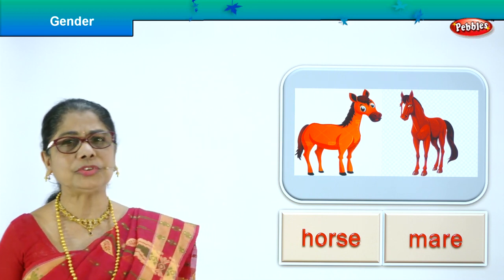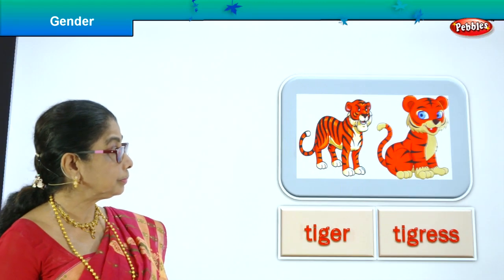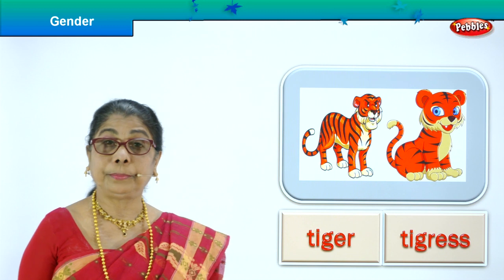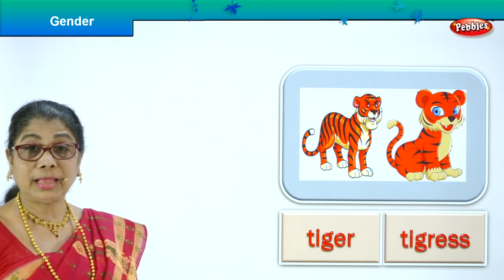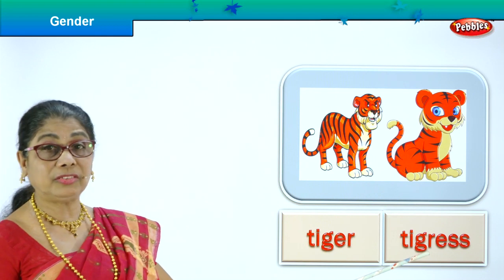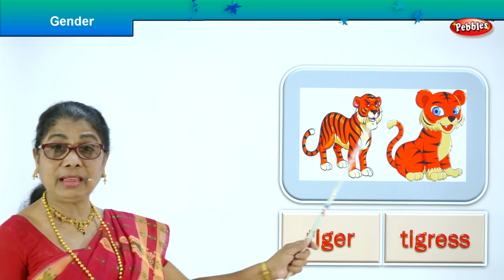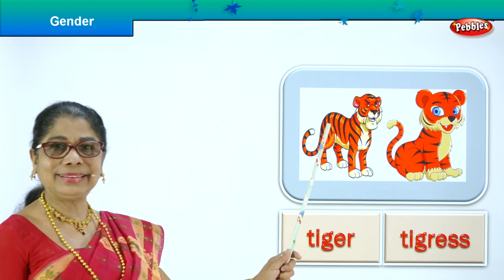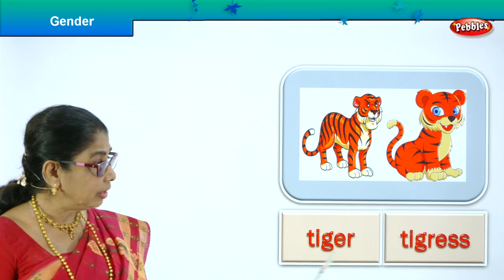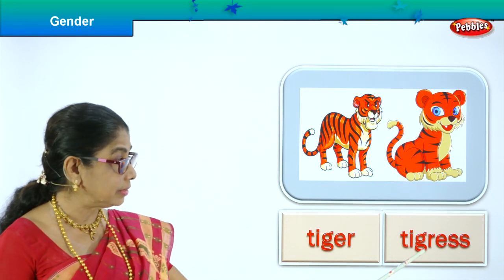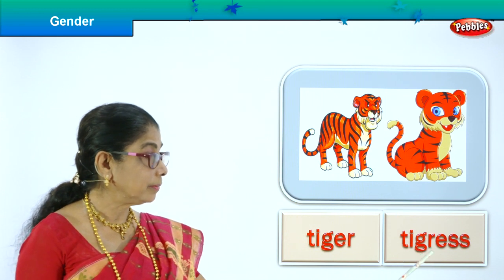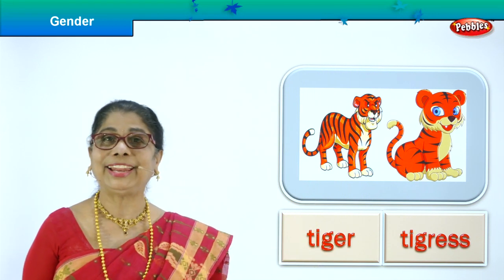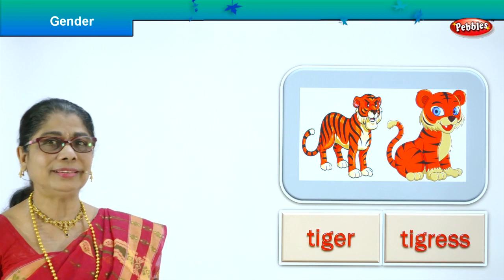What do you have here? You have a tiger — masculine. And she is tigress — feminine gender. Tiger is masculine, tigress is feminine. So this is mama and this is daddy. Look at the spelling: tiger, tigress. Tiger is male, tigress is female. Good. So we are learning genders today.